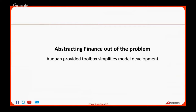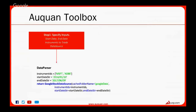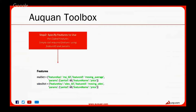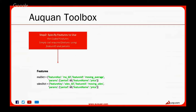Now let's talk about solving this data problem with Awkward — we want to make that simple as well. With that in mind, we've developed a toolbox to help you solve this problem. The toolbox is very extensible and easy to use — you specify certain parameters and work on getting your prediction function right. In the toolbox, you specify what instruments to trade, the date range, and where to get the data. The data parser module automatically pulls that data and converts it into the expected format. We also give you pre-written features you can call just by specifying a dictionary with the feature name and its parameters.